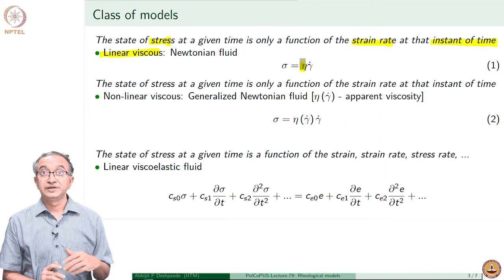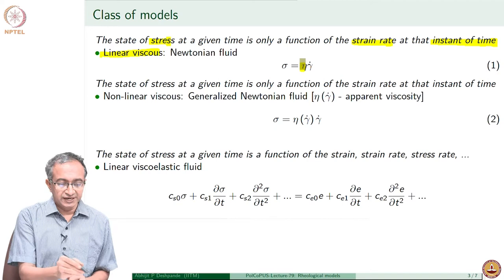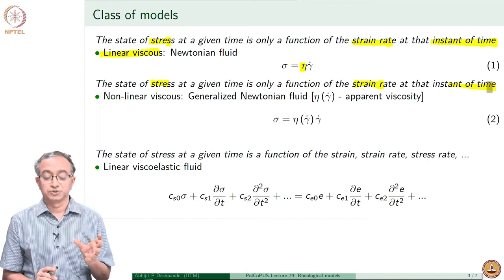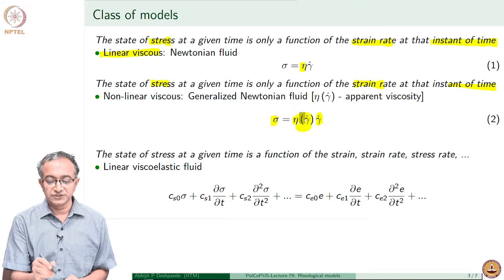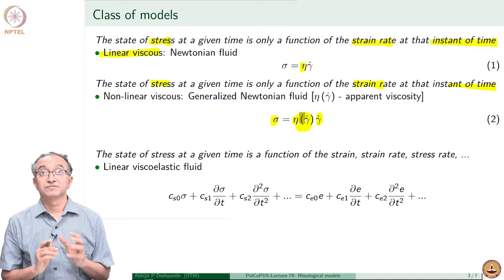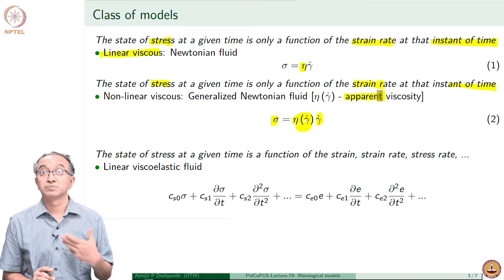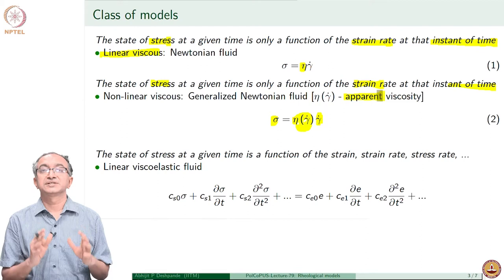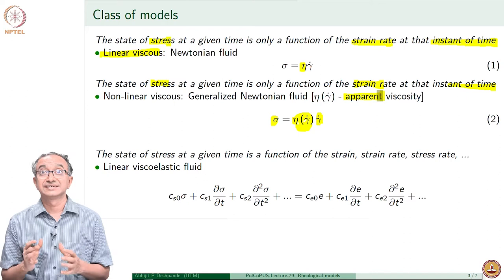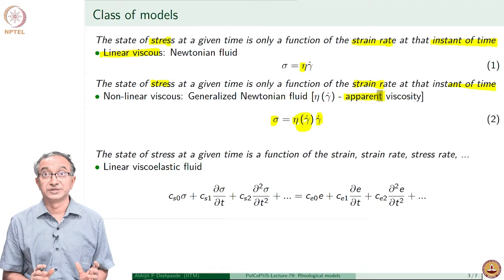When we look at non-Newtonian fluids, one implication is that stress is no longer proportional to strain rate. Stress is still a function of strain rate at that instant of time, but it is not a proportional function — the proportionality constant itself is related to the strain rate. We therefore call this apparent viscosity, because it is no longer a material constant but a material function that varies as a function of strain rate. Shear thinning, shear thickening, pseudo-plastic or dilatant are examples of these non-linear viscous or generalized Newtonian fluids.